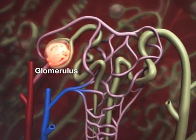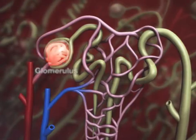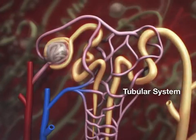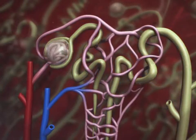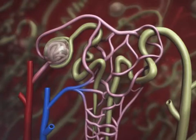The nephron consists of a capillary network called the glomerulus and a tubular system in which substances either are reabsorbed from the glomerular filtrate or retained in the tubules, where they're collected as waste products to be eliminated in the urine.